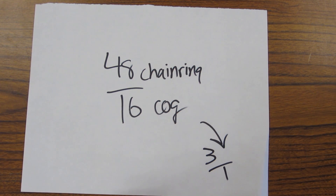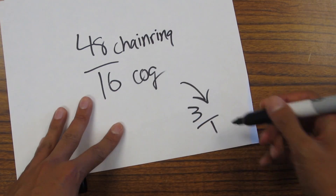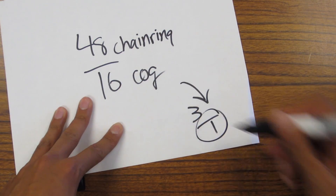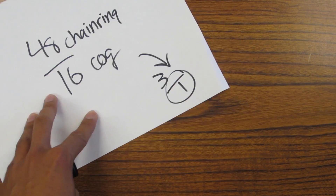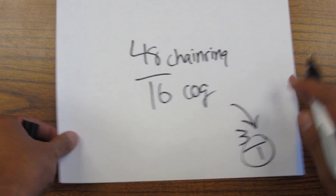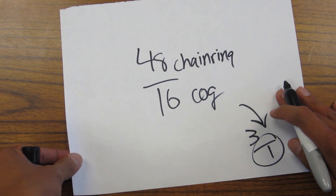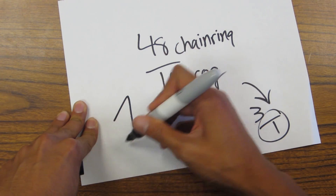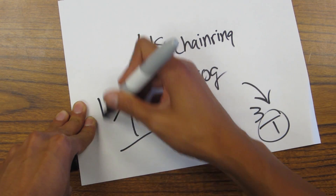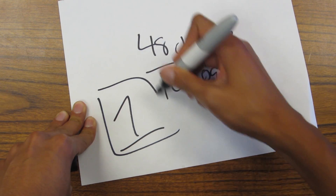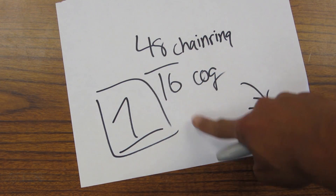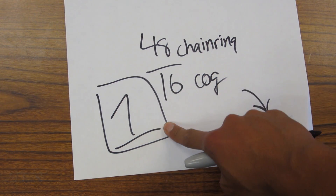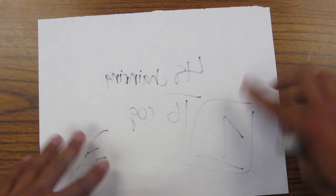The denominator is the number of skid patches that you have. So on this 48/16 ratio, you get one whole skid patch. And no, that is not a high number. But let's do another example.